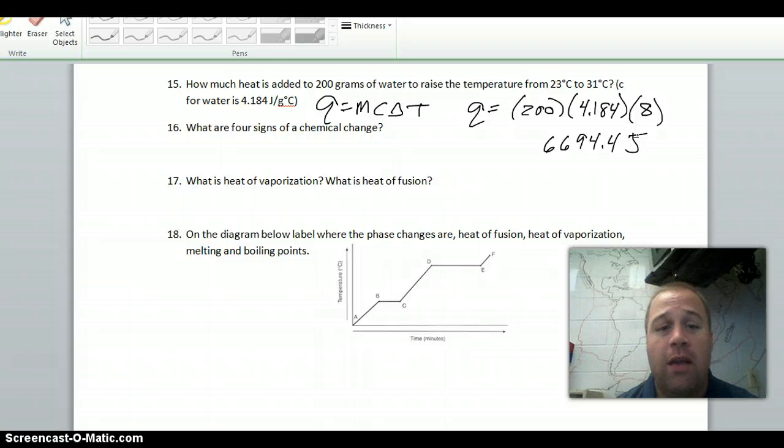For number 16, four signs of a chemical change. You're looking for a change in heat, so either hotter or cooler, a change in color, production of a gas, which usually means bubbles, or the formation of a precipitate, which is a solid that forms when you mix two liquids together.